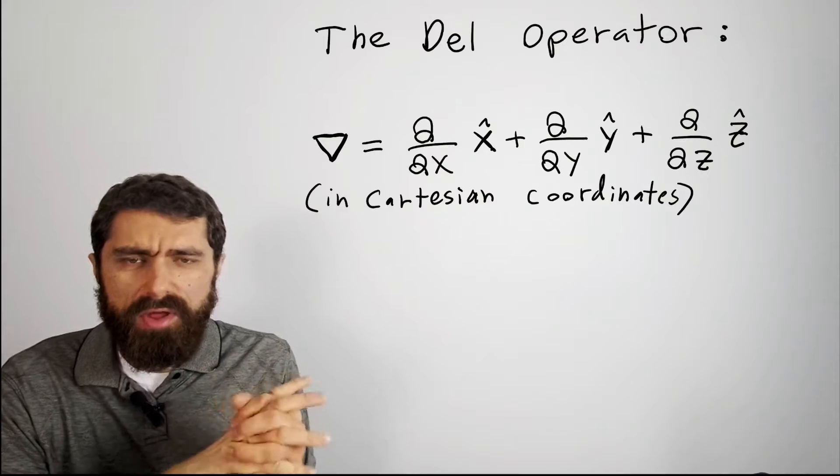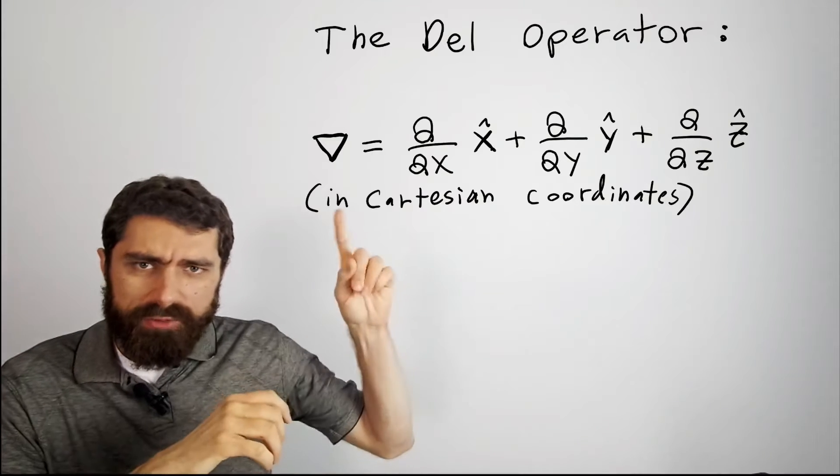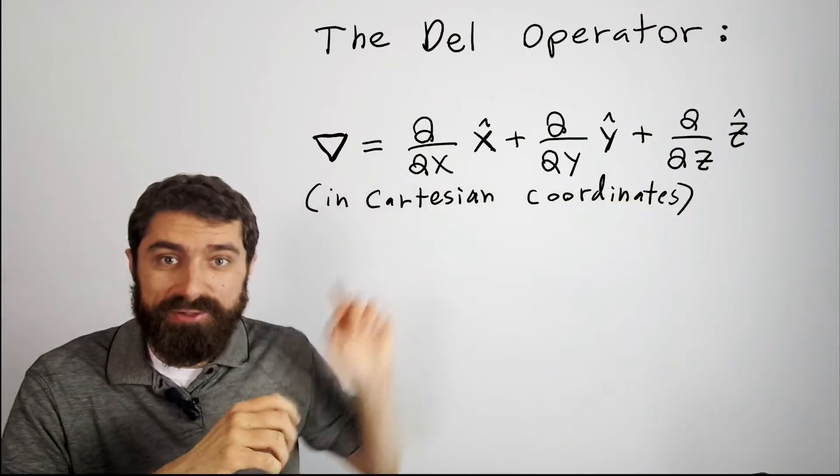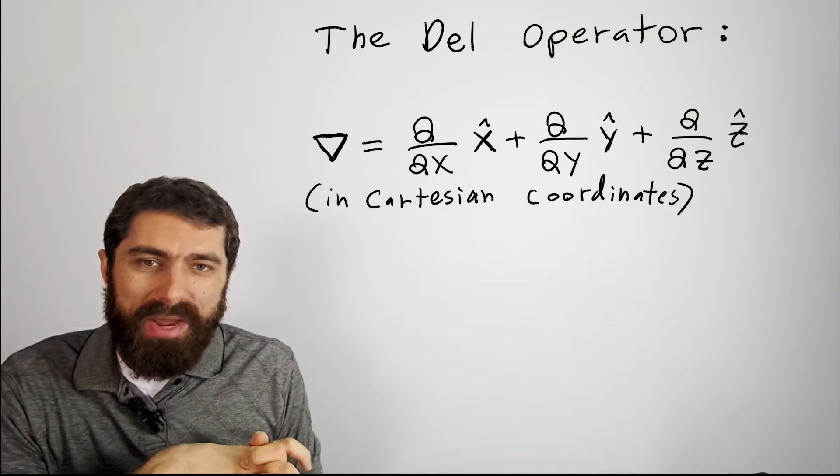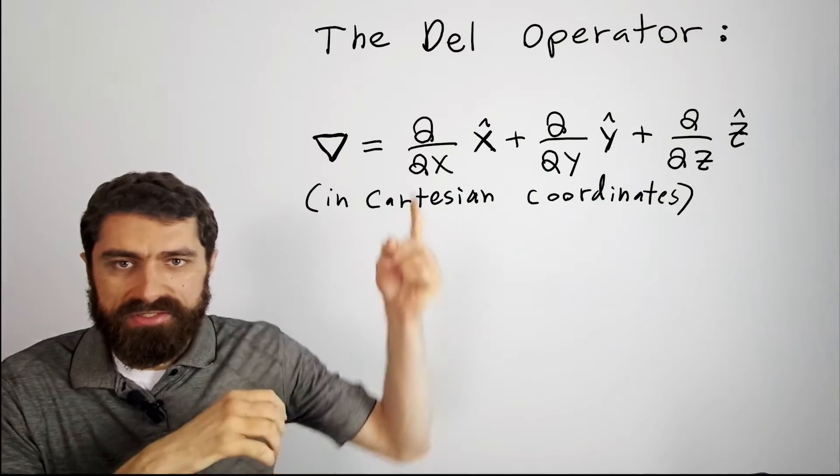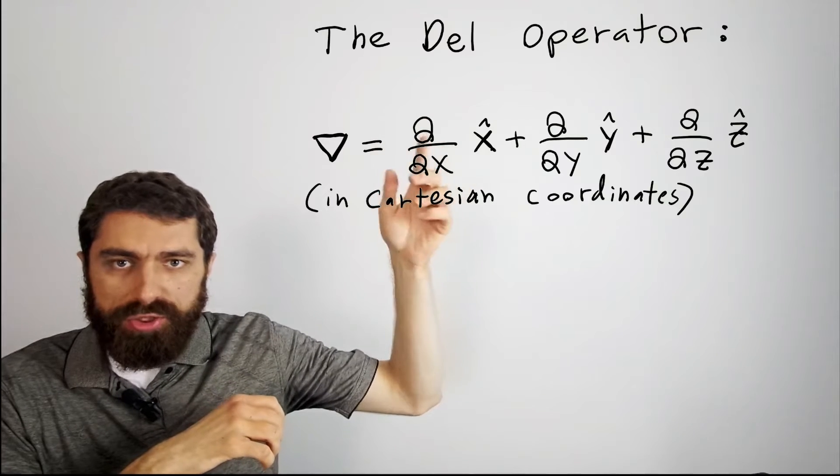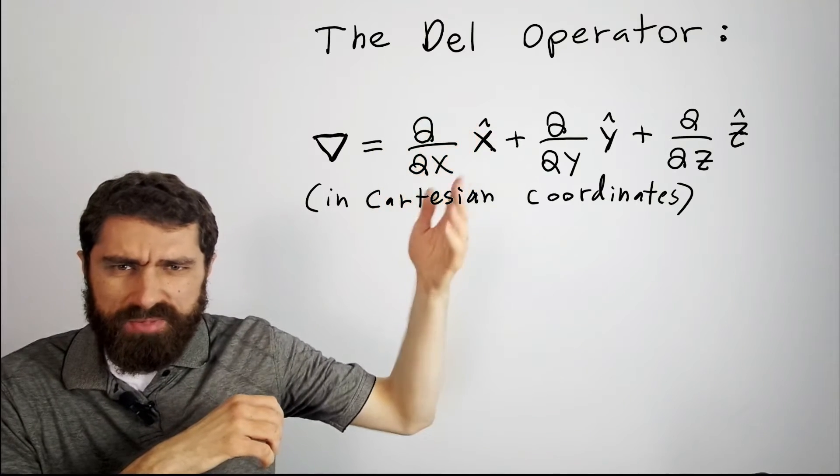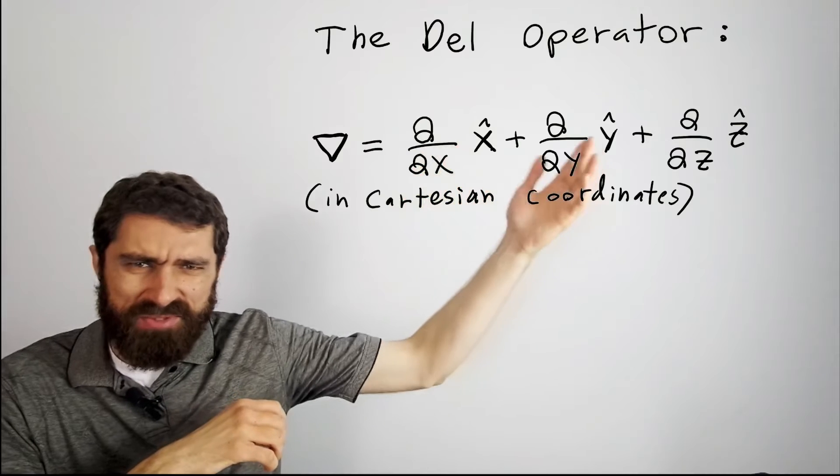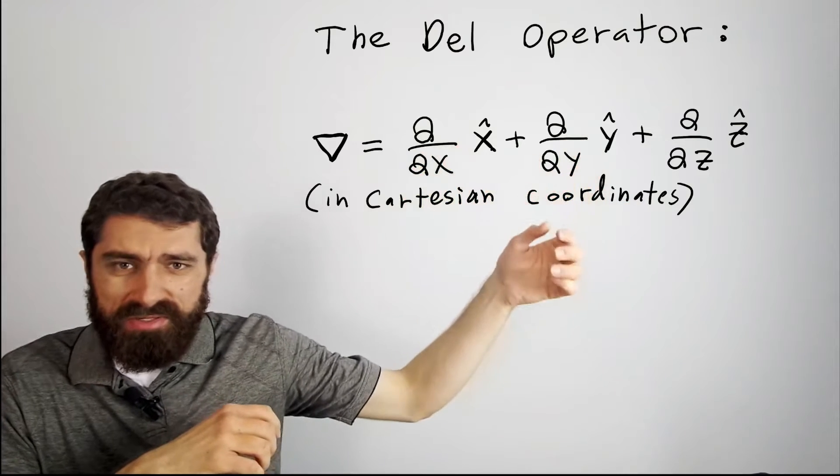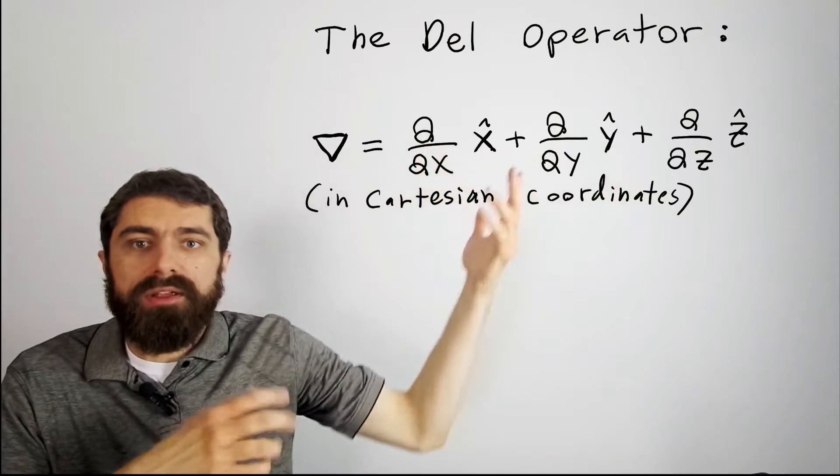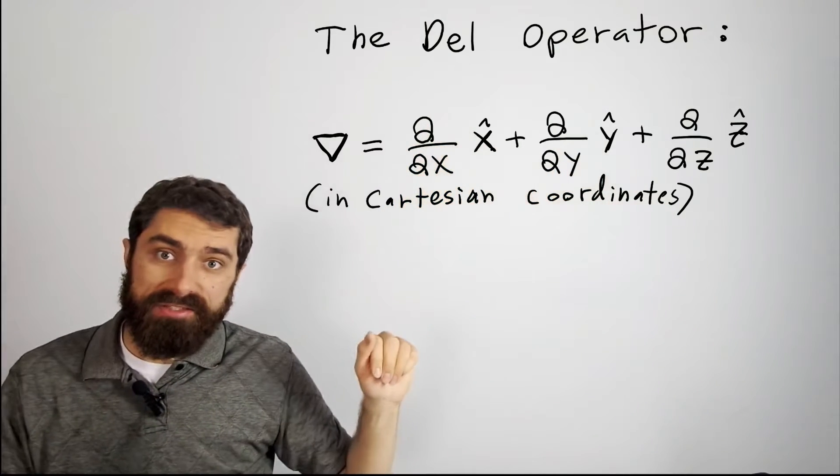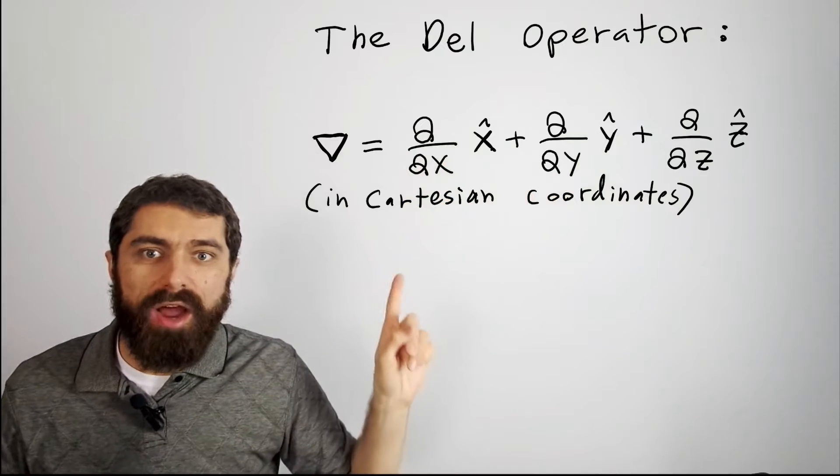So the del operator is equal to this in Cartesian coordinates. Now, by itself, it's kind of meaningless. Here we've got like partial of what with respect to x, x hat plus partial y, y hat, and I mean, what are you taking the derivative of? By itself, it's meaningless. That's why we call it an operator.